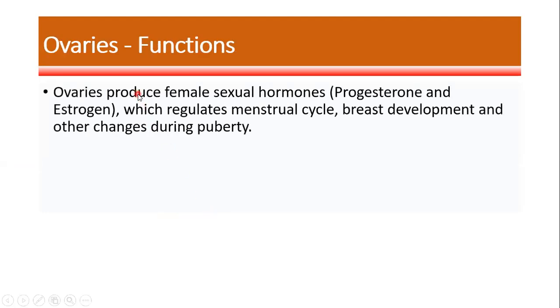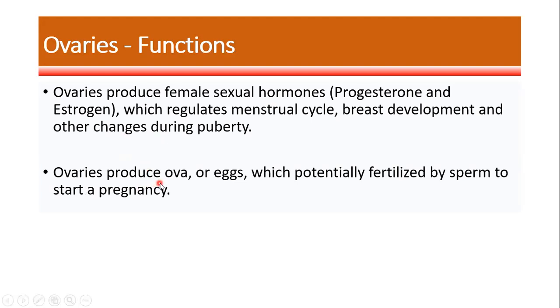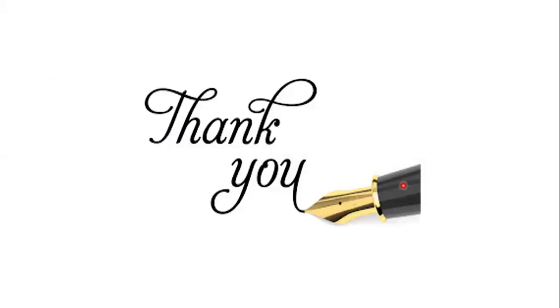What are the functions of the ovaries? The ovaries are responsible for the production of female sexual hormones like progesterone and estrogen. These hormones provide feminine characteristics, help in the regulation of the menstrual cycle, breast development, and other changes during puberty. At the same time, the ovaries also produce ova or eggs, which are potentially fertilized by the sperm to start a pregnancy. This is all about the female reproductive system — thank you.